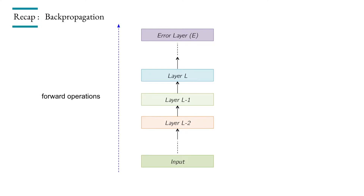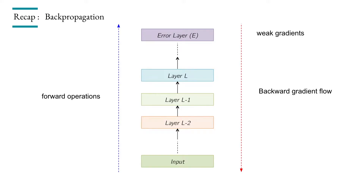In the forward operation, input passes layer by layer and we memorize the partial derivatives of each output with respect to inputs. We use these in backpropagation to update parameters. But we end up with very weak gradients. In the early layers we had strong gradients, but going deeper and deeper, the gradients become very small values.